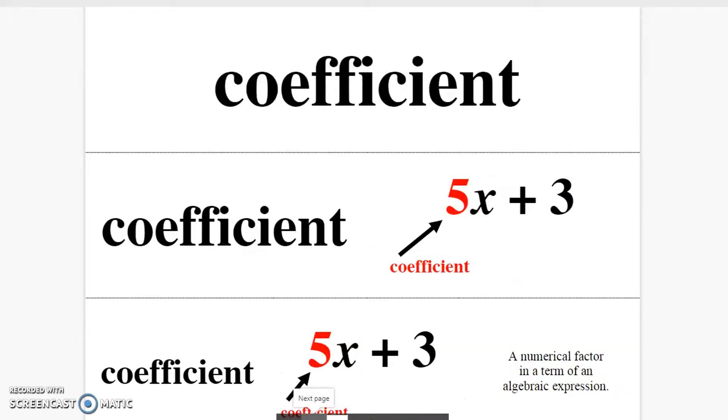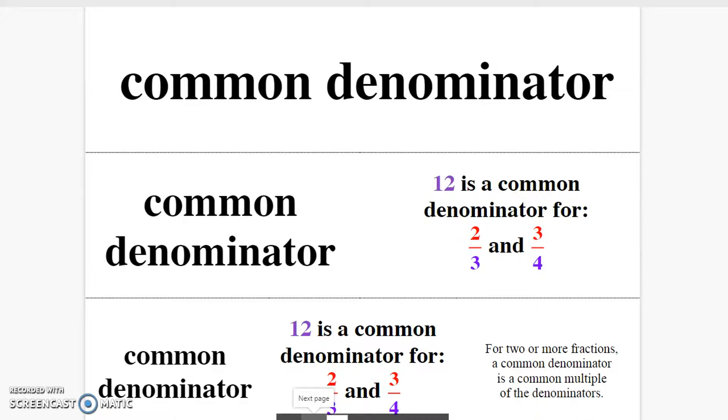Coefficient. A numerical factor in a term of an algebraic expression. Common denominator. For two or more fractions, a common denominator is a common multiple of the denominators.